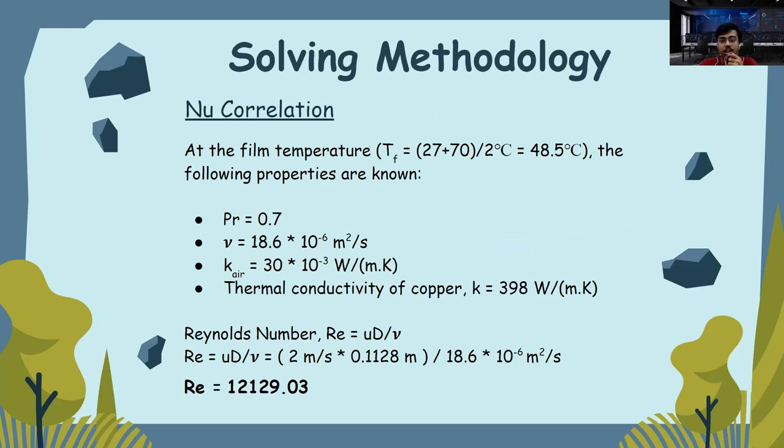Now, Nusselt correlation. At the film temperature Tf = 48.5 degrees Celsius, we have the following properties. Prandtl number equals 0.7. Kinematic viscosity equals 18.6 × 10^-6. Thermal conductivity of air is equals to 30 × 10^-3. Thermal conductivity of copper k is equals to 398.4 per meter Kelvin.